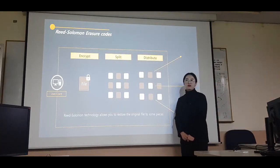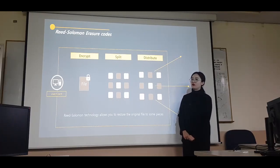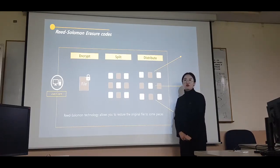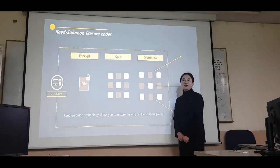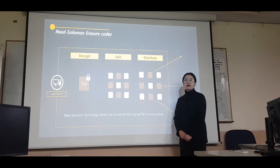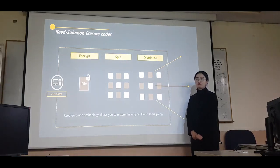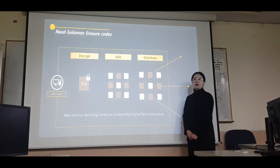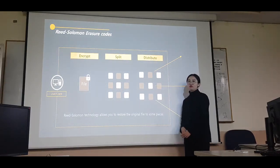Storj uses Reed-Solomon erasure coding. The file is split using Reed-Solomon technology, and pieces of the file are at risk of loss. But Reed-Solomon technology allows you to restore the original file from some of the pieces.